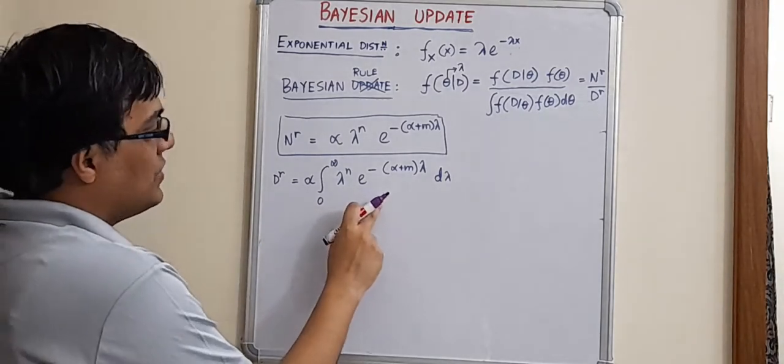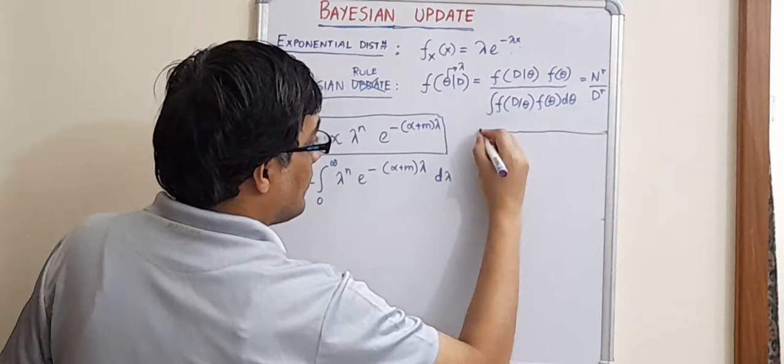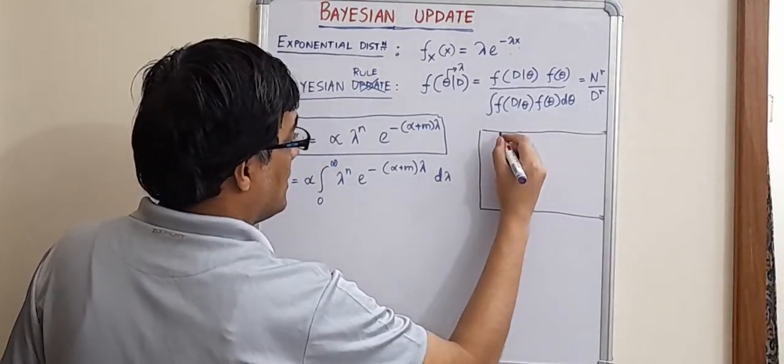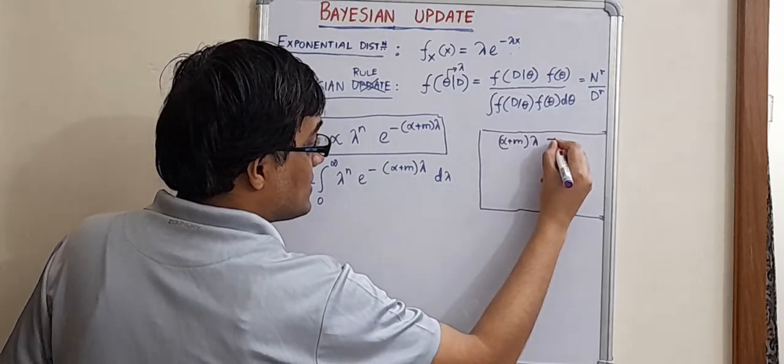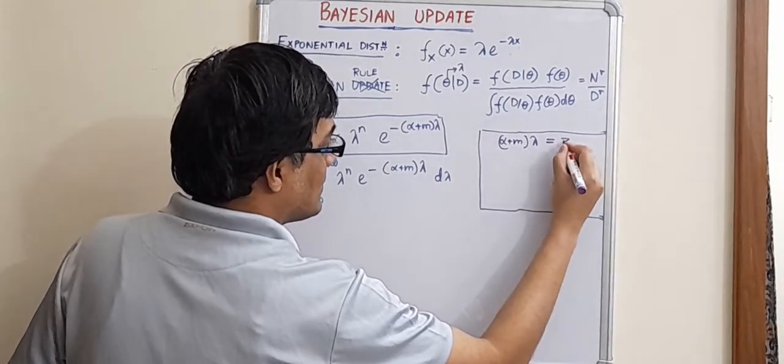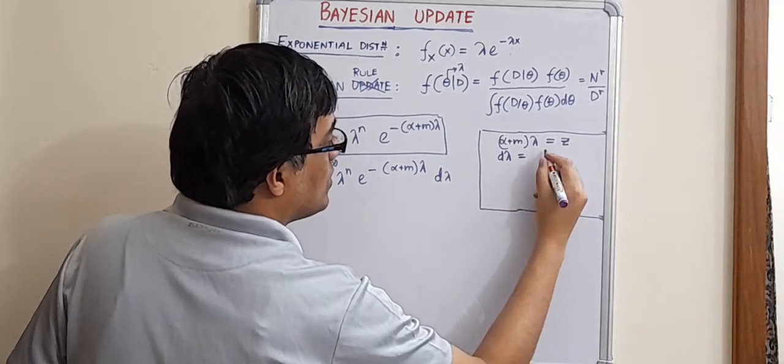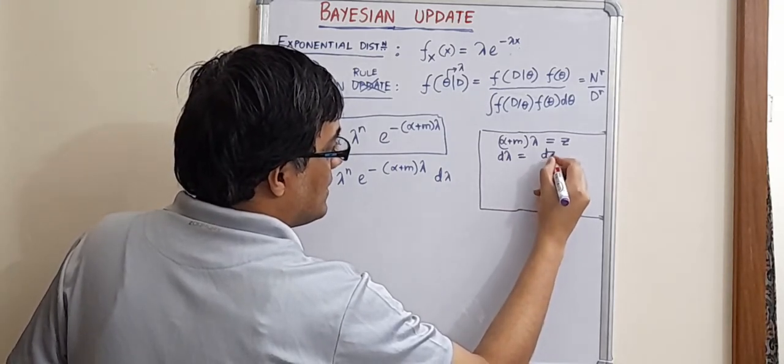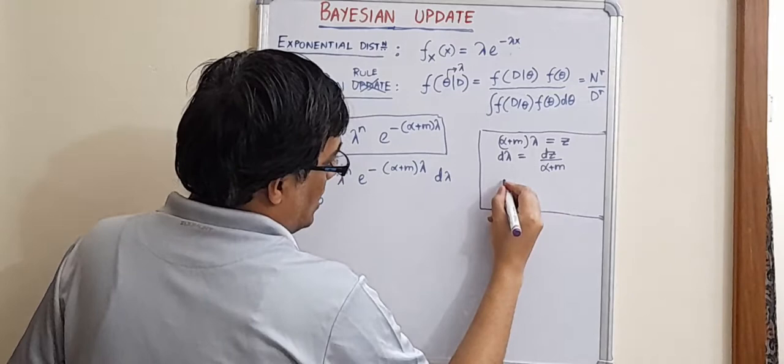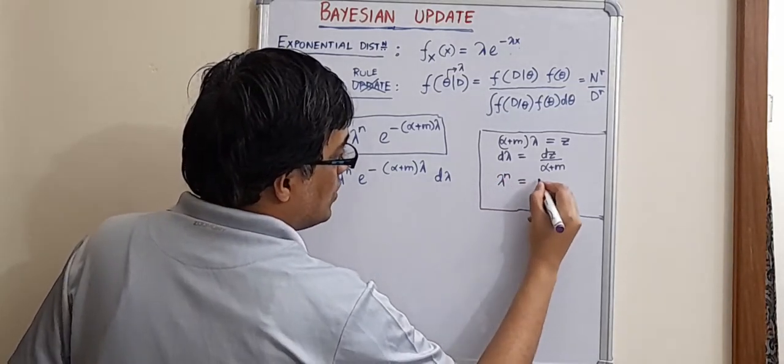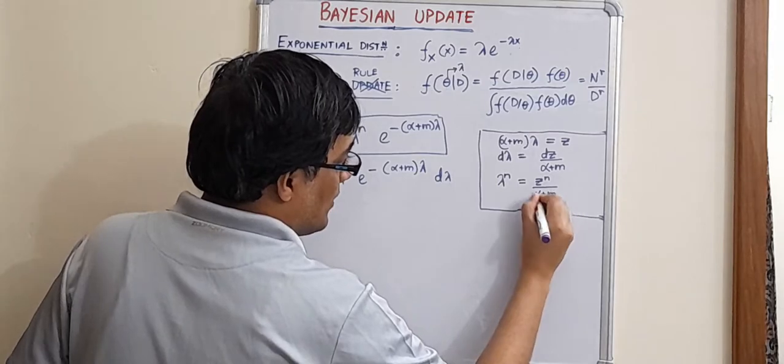So, this integral has to be evaluated, right? So, in order to do that, what I will do is, I am putting a box here and substituting alpha plus m into lambda as z. So, d lambda is equal to dz by alpha plus m and lambda to the power n. That is equal to z to the power n divided by alpha plus m to the power n.